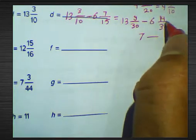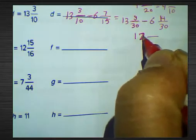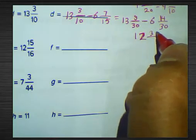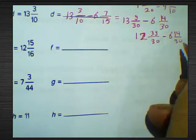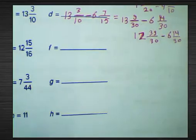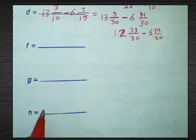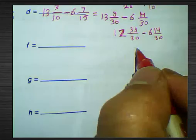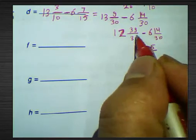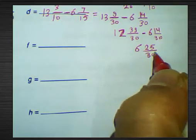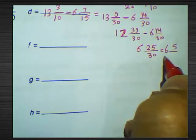Since 9 subtract by 14 we can't do, borrow 1 from 13, making it 12, and 9 over 30 becomes 39 over 30. Now: 12 and 39 over 30 subtract by 6 and 14 over 30. Difference: 12 minus 6 equals 6, and 39 minus 14 equals 25, over 30. Simplify by dividing by 5: 25 divided by 5 equals 5, 30 divided by 5 equals 6. The result is 6 and 5 over 6.